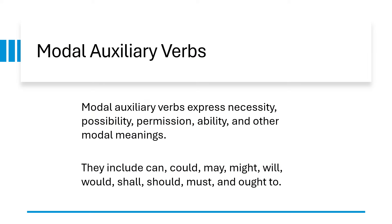Modal auxiliary verbs express necessity, possibility, permission, ability and other modal meanings. They include can, could, may, might, will, would, shall, should, must and ought to. We have already discussed this topic in detail in a previous video. You can watch that video in the English grammar playlist on this channel.